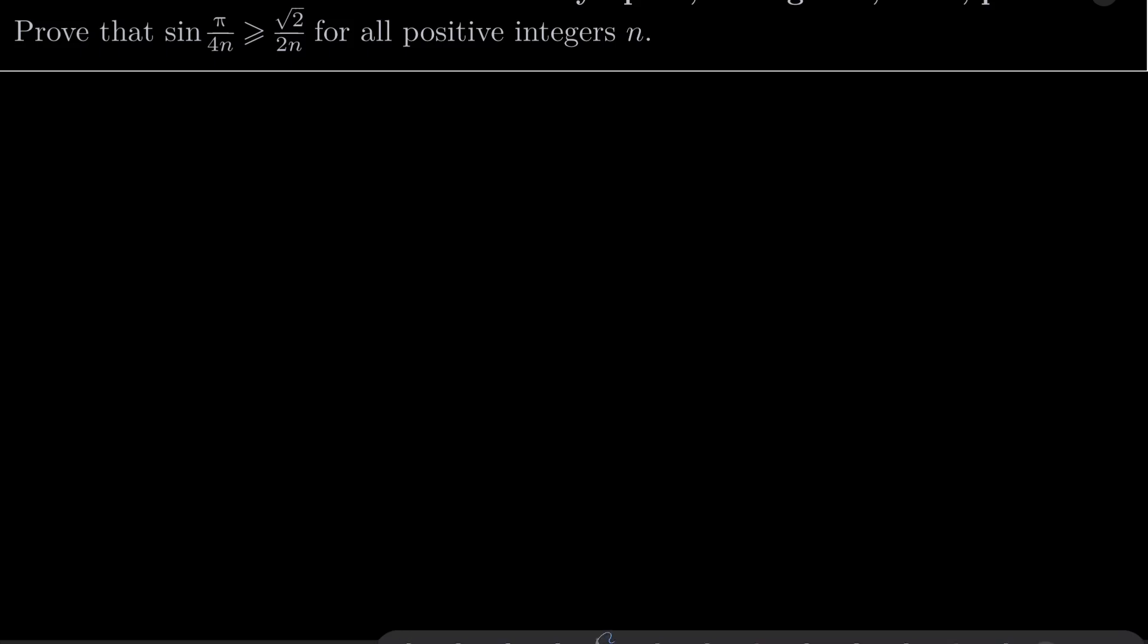Alright. As I suggested, let f(t) = sin(πt/4) - √2t/2 for 0 ≤ t ≤ 1. Let's investigate the first derivative.